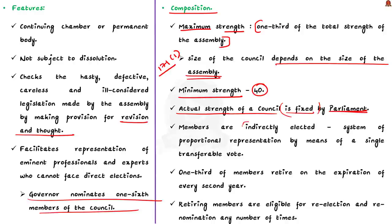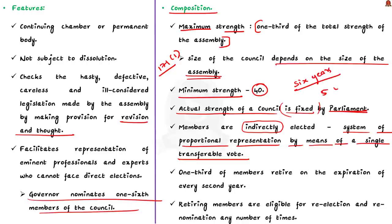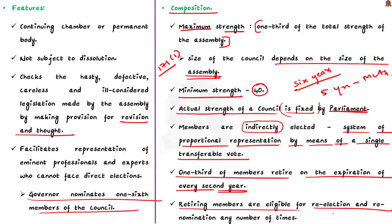The members of the legislative council are indirectly elected. The members are elected in accordance with the system of proportional representation by means of a single transferable vote. Note that the tenure of members of the legislative council is different from that of the MLAs, because a member of the legislative council continues for a period of six years whereas the term of MLAs is five years only. Also, one-third of legislative council members retire on expiration of every second year and the vacant seats are filled by fresh elections and nominations by the governor at the beginning of every third year. That is why we call it a permanent assembly. The retiring members are eligible for re-election and re-nomination any number of times.